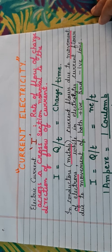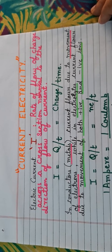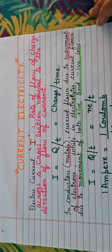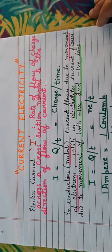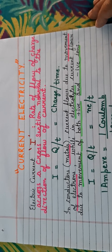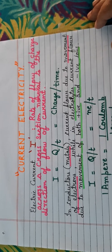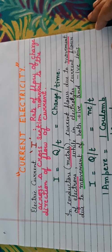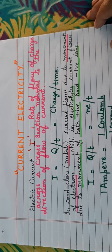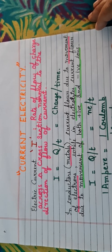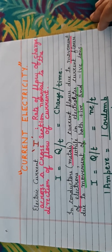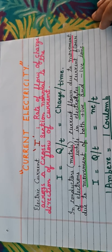Children, we all know that electricity forms an integral part of our lives because there are so many appliances which work on electricity. We use refrigerators, television, computer, laptops, microwave oven, geyser, and many such appliances in our houses which work on electricity. We can actually not imagine a life without electricity. So let us focus on what is electric current.